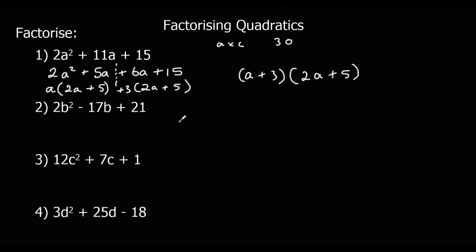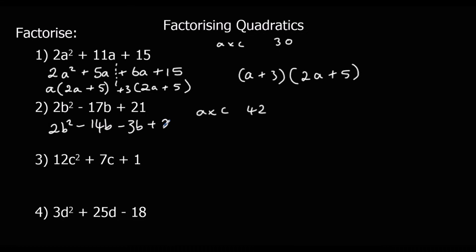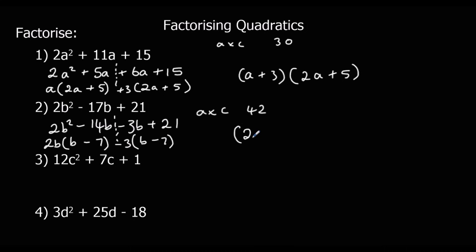Second question: a times c is 42. The factors of 42 that make minus 17 are 14 and 3. So we get 2b squared minus 14b minus 3b plus 21. Cutting it down the middle and taking 2b out of the first bracket gives b minus 7. We get b minus 7 again in the second bracket, and multiplying by minus 3 gives minus 3b and plus 21. So our two brackets are (2b minus 3)(b minus 7).